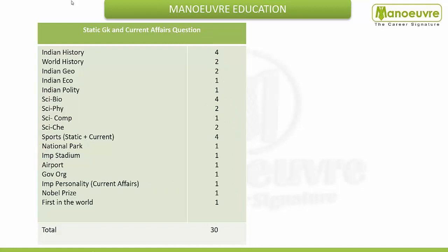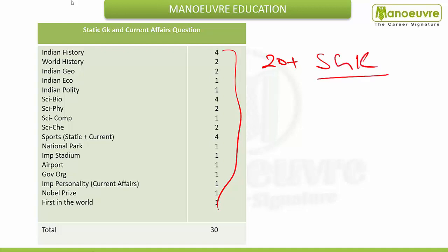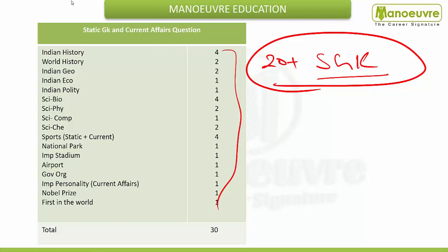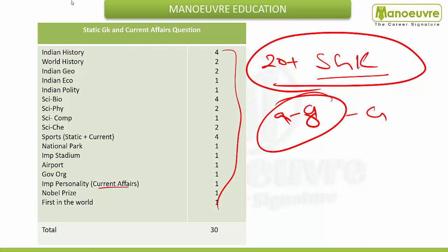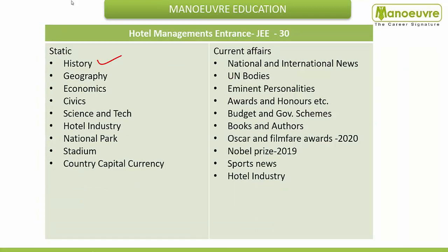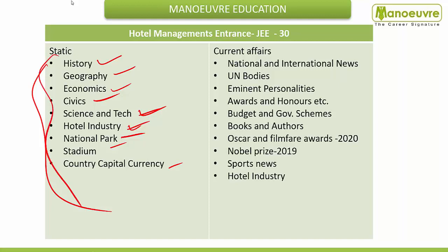So in this way, the full weightage is divided here. It helps you understand what the weightage of static GK versus current affairs will be. If you do the full analysis, there are more than 20 questions from static GK. And for current affairs, you will find nearby eight to nine questions. The questions from current affairs include: important personalities, sports section — two questions, airport and stadium news, and other current events. So overall, the paper's nature will be most static GK oriented. So focus very well on static GK.